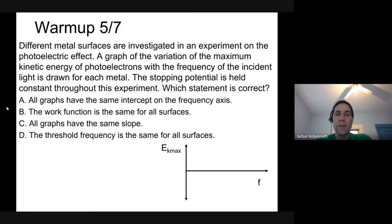A. All graphs have the same intercept on the frequency axis. B. The work function is the same for all surfaces. C. All graphs have the same slope. And D. The threshold frequency is the same for all surfaces.